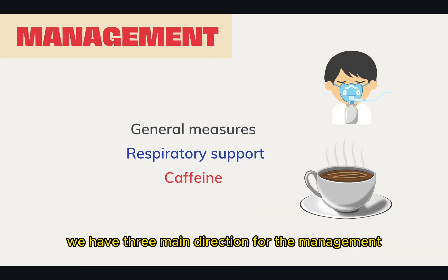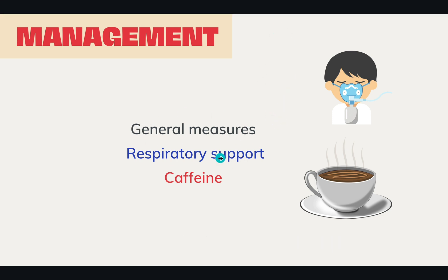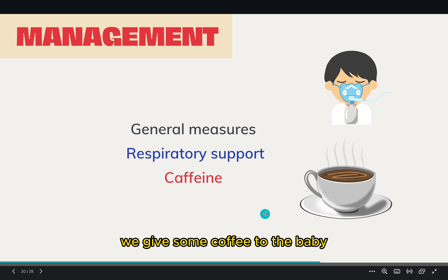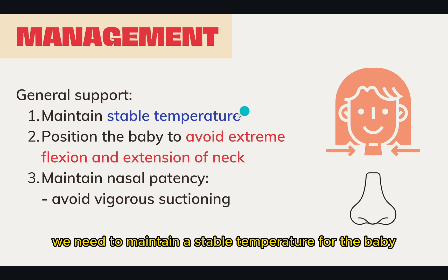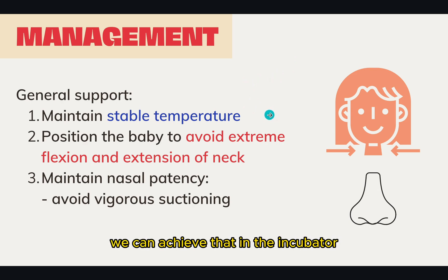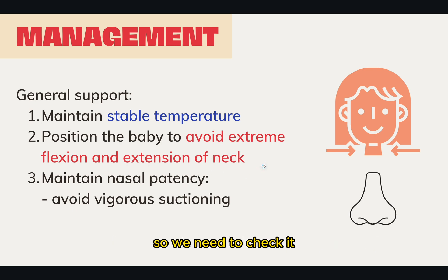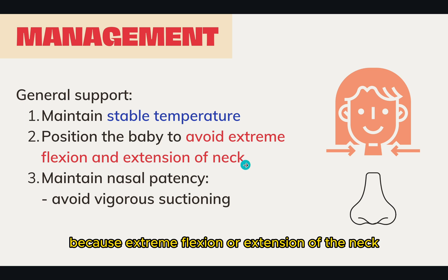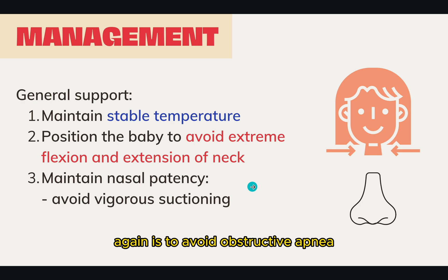For management, we have three main directions: general measures, respiratory support, and caffeine. For general measures, we need to maintain a stable temperature for the baby — not hyperthermia or hypothermia — which we can achieve in an incubator. We need to position the baby to avoid extreme flexion and extension of the neck, because that can lead to obstruction of the airway and obstructive apnea. We also need to maintain nasal patency and avoid vigorous suctioning, as that may damage or injure the nose.